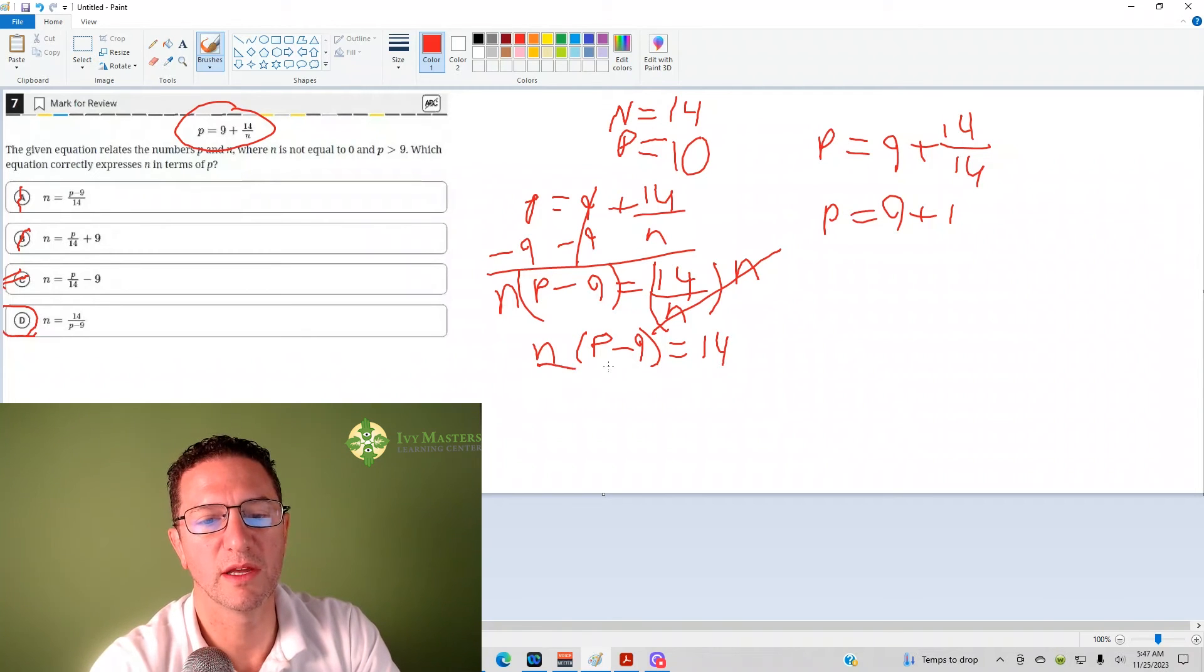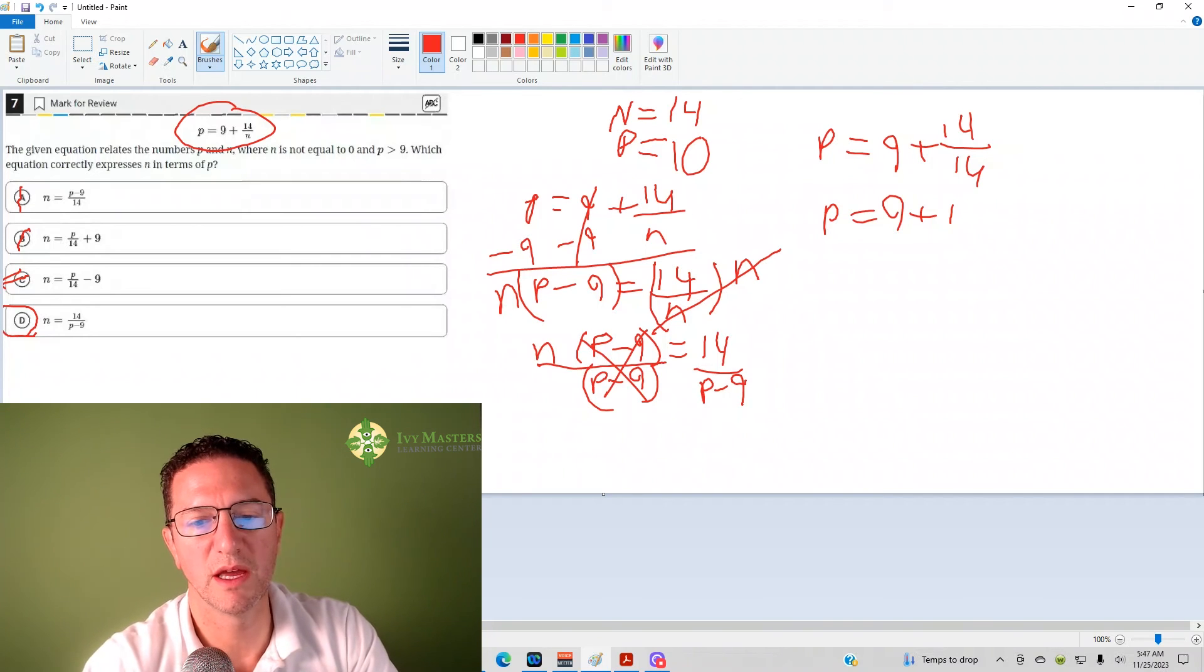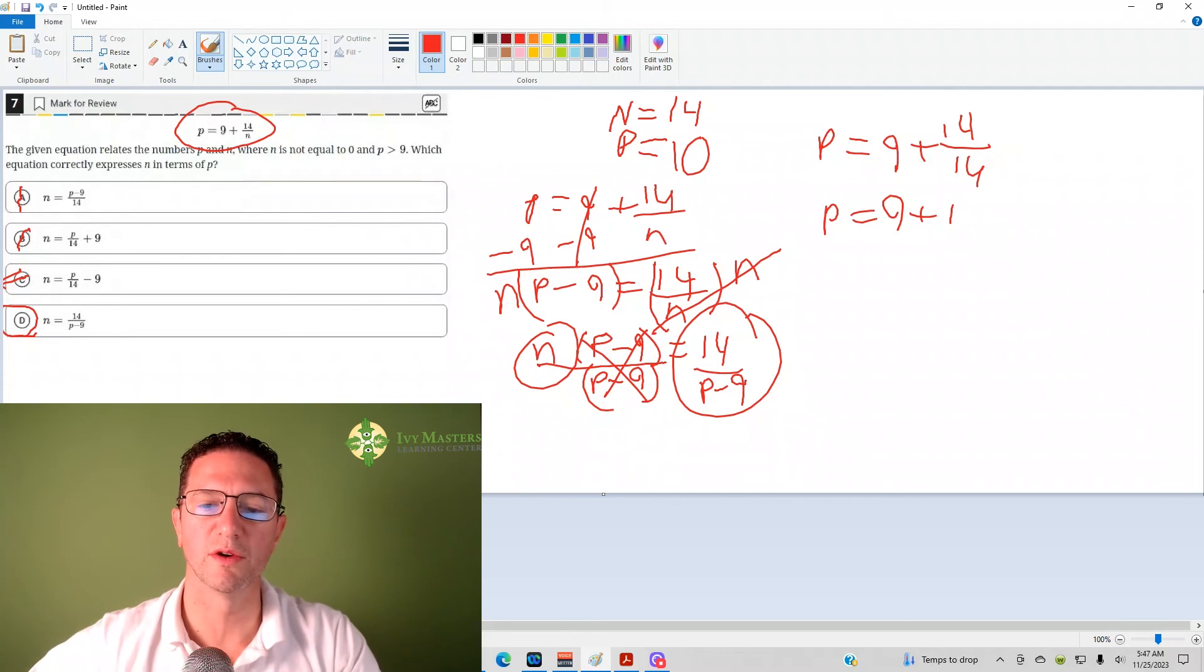And then I've got n times p minus 9 equals 14. Now again, I'm trying to get the n alone, so I divide both sides by p minus 9. The p minus 9's cancel there, and then I get answer choice D, which is n equals 14 over p minus 9.